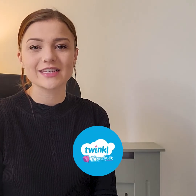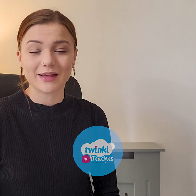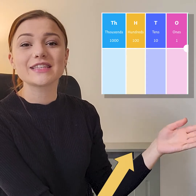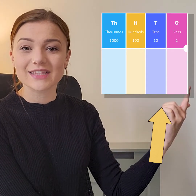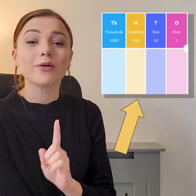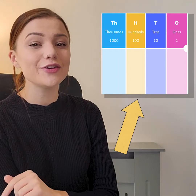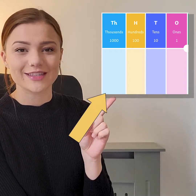When we read and represent numbers to 10,000, it can be really useful to use a place value chart. Here is a place value chart. As you can see, we've got the ones column, the tens column, the hundreds column, and we also have a new column, which is the thousands column.